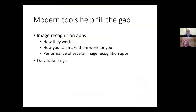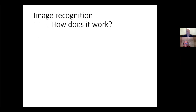Some of the modern tools that help fill the gap between the old field guide books and the dichotomous keys — there's a big gap in between — are image recognition apps. We're going to talk about how they work and how you can make them work better for you, compare the performance of five different apps, and also talk about database keys, which keep you from getting stuck when you don't have fruit or other needed parts.